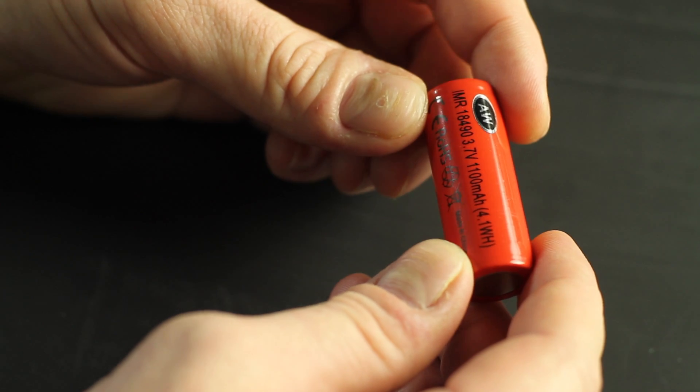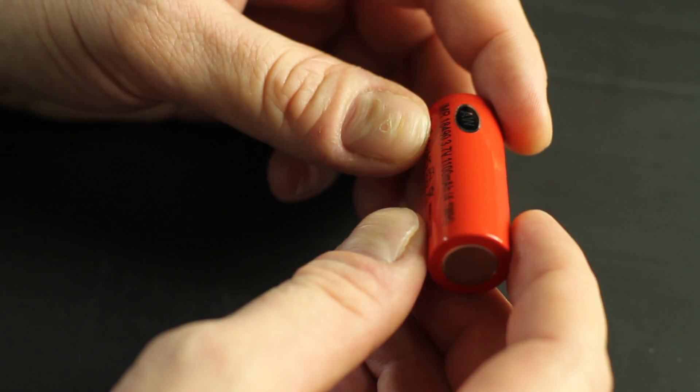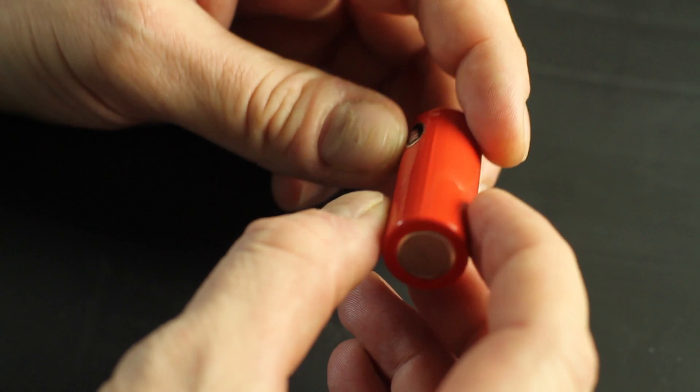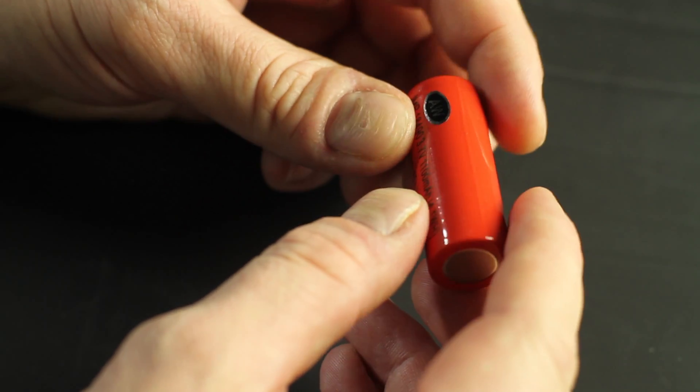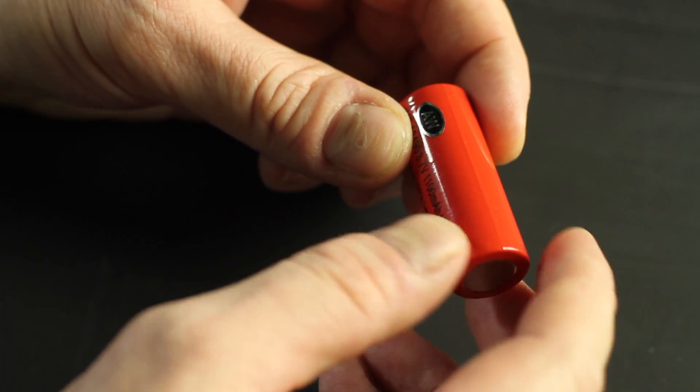So first for the AW batteries. Anytime you're about to use a vape for the first time you want to do a visual inspection. Starting with the battery you want to ensure that there's no dents, damage, or corrosion. Take a look at your negative and your positive posts and make sure there's no oxidation or corrosion. Also you want to make sure that if your battery is expanding you discard it and don't use it.